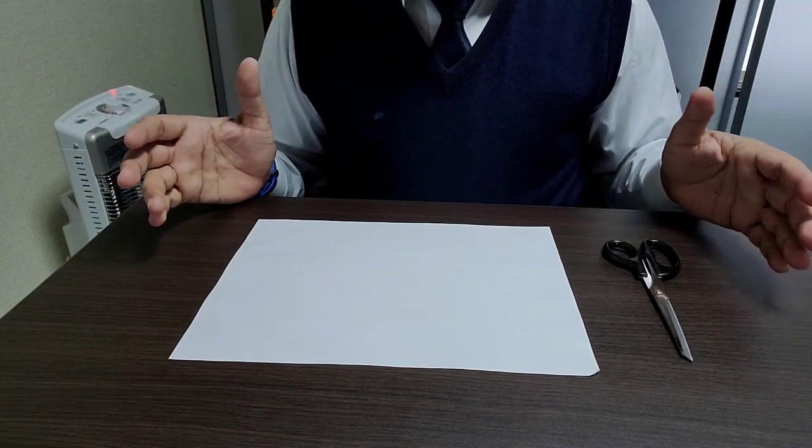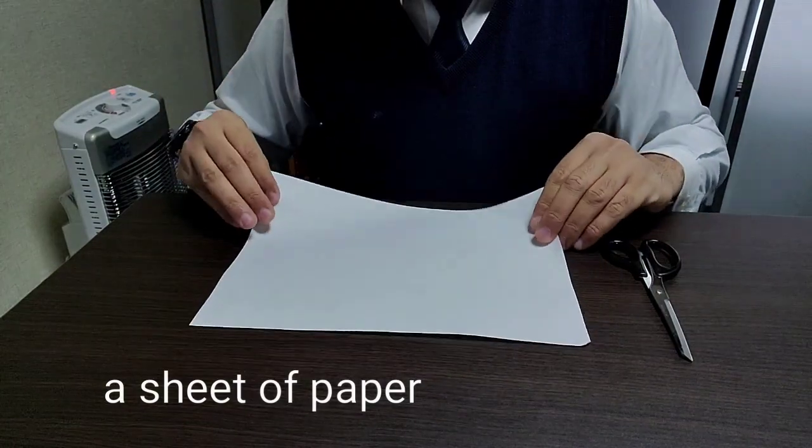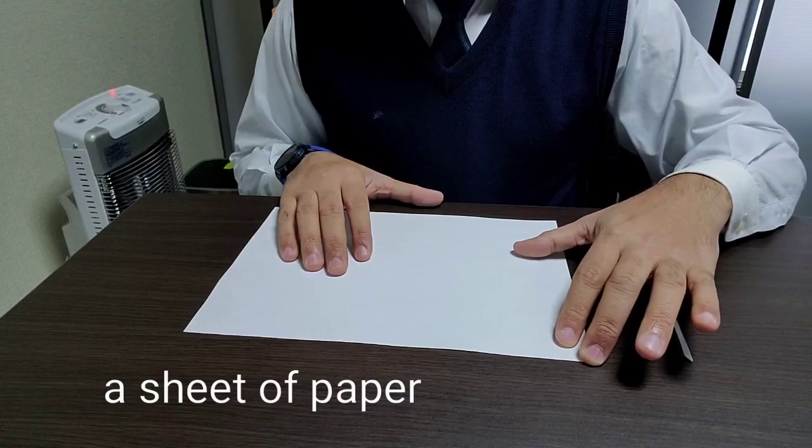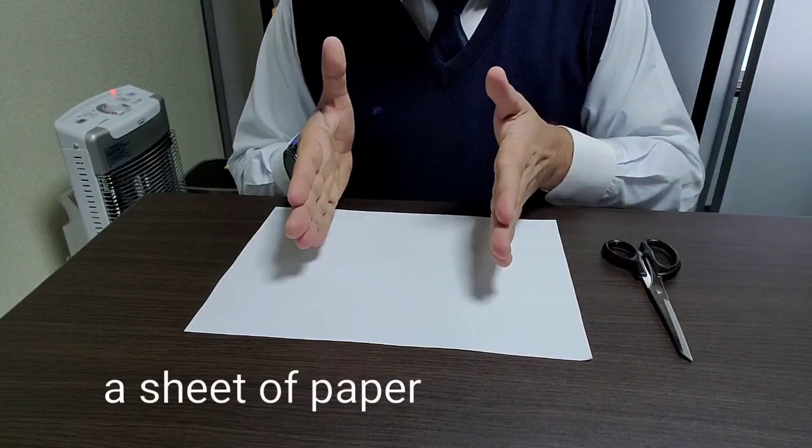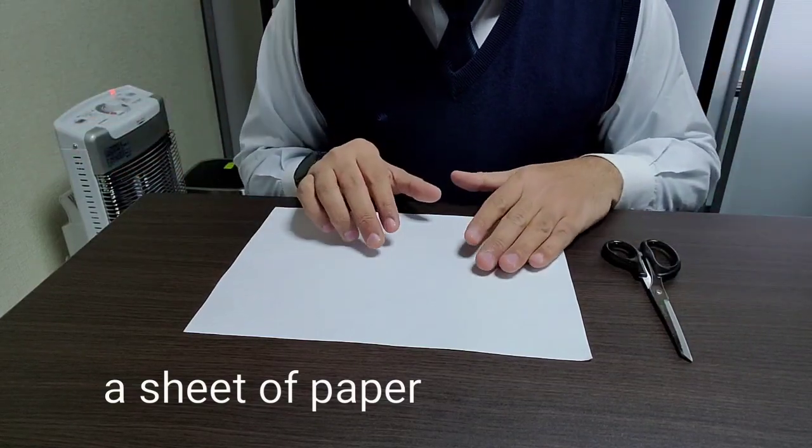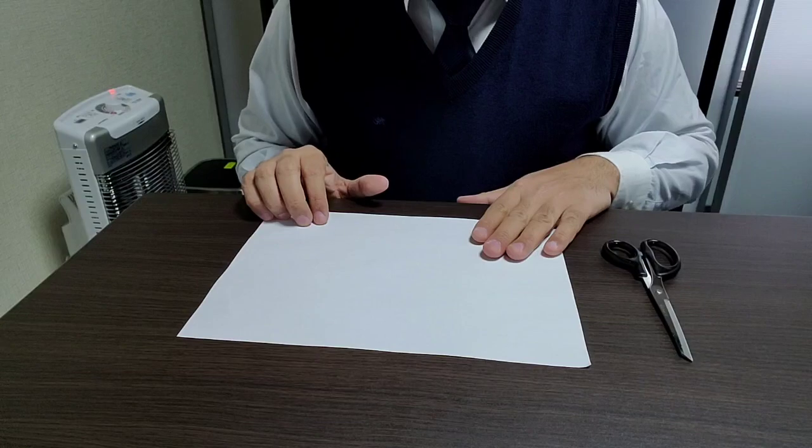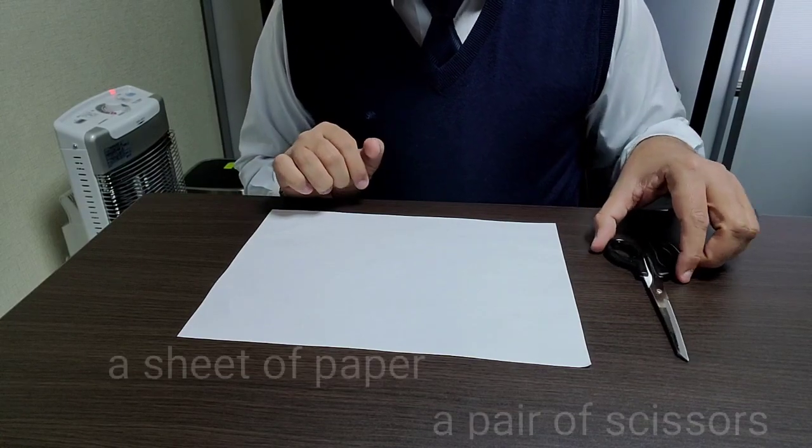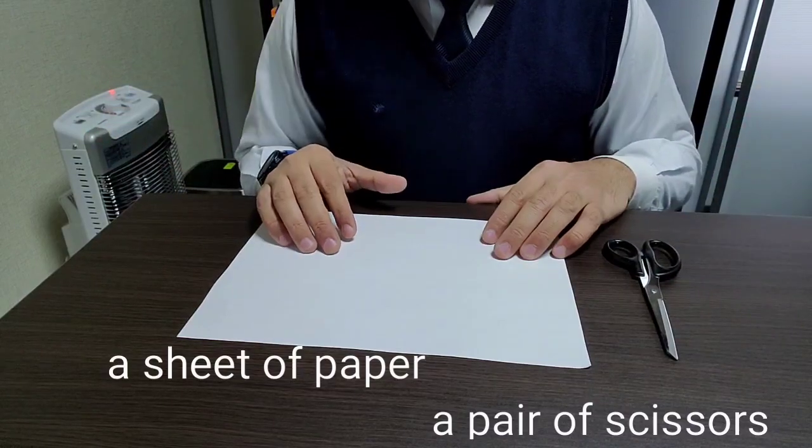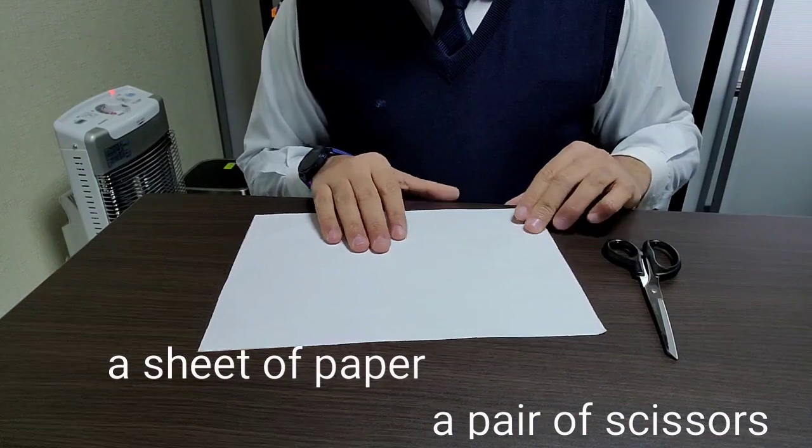Okay, so as always, first let me introduce what things you need to do this simple experiment. First thing that you need is a piece of paper. Now here I have taken an A4 sheet of paper, but it can be even a smaller or a larger one, depends on your preference and availability. So we need a piece of paper and the second thing we need is a pair of scissors. That's all we need.